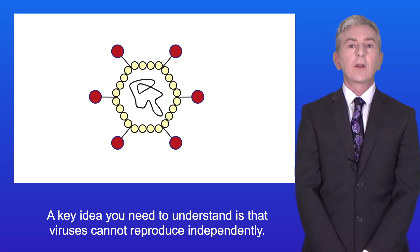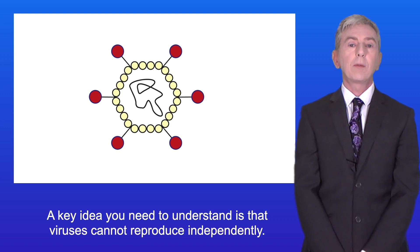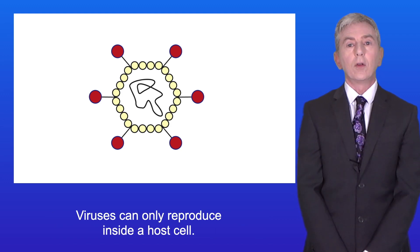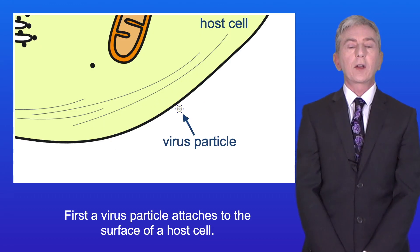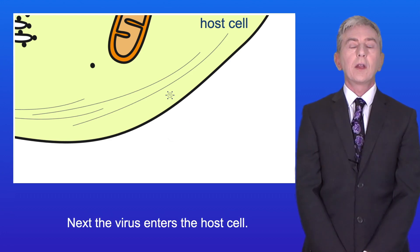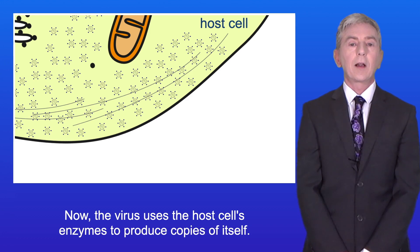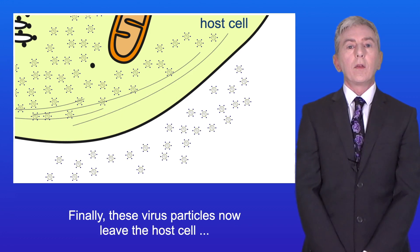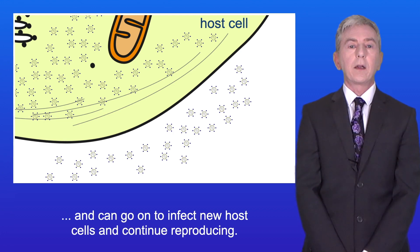A key idea you need to understand is that viruses cannot reproduce independently. Viruses can only reproduce inside a host cell. First a virus particle attaches to the surface of a host cell. Next the virus enters the host cell. Now the virus uses the host cell's enzymes to produce copies of itself. And finally these virus particles leave the host cell and can go on to infect new host cells and continue reproducing.